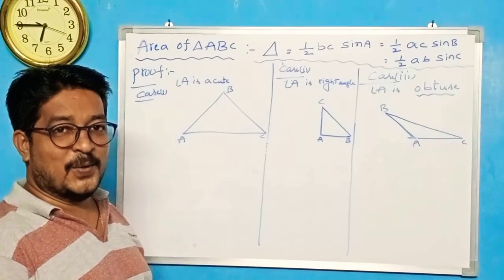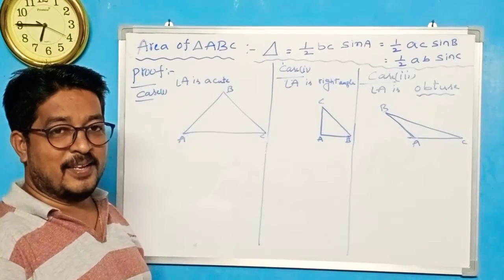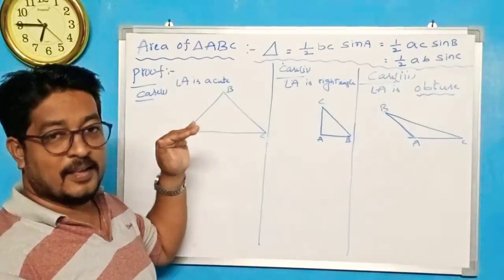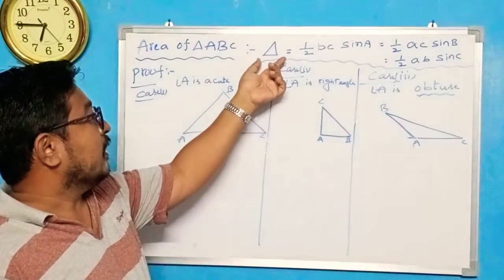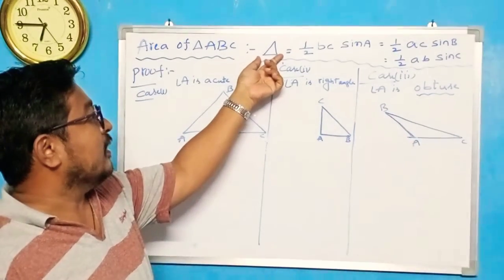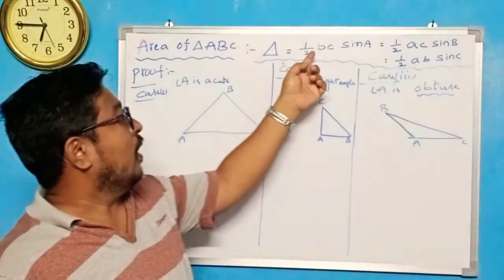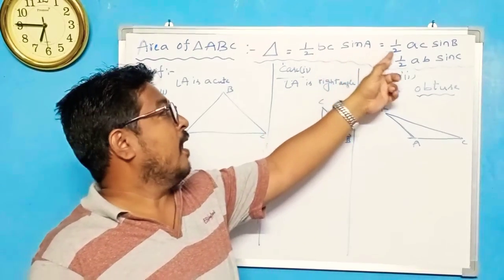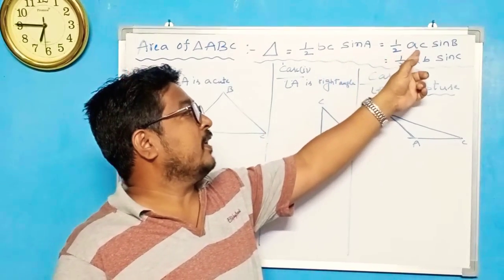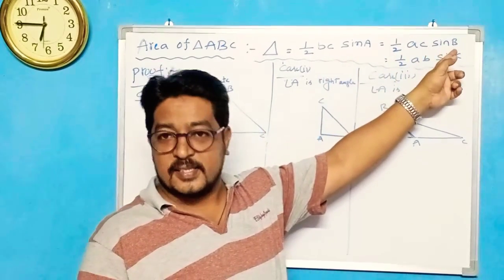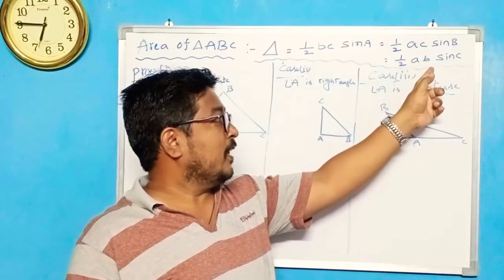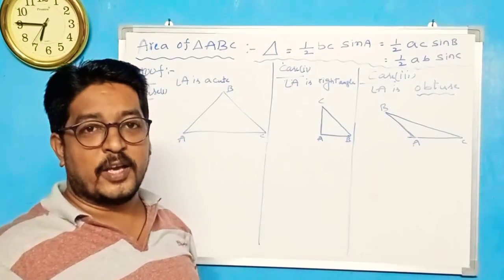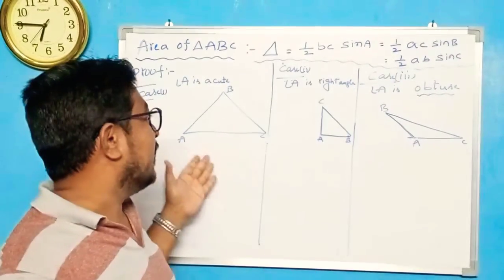Hello, Namaste. This is the Grouse Mass Academy. Today my topic is area of triangle ABC. Area of triangle is equal to delta equals half BC sin A, half AC sin B, half AB sin C. This formula I can prove in three cases.